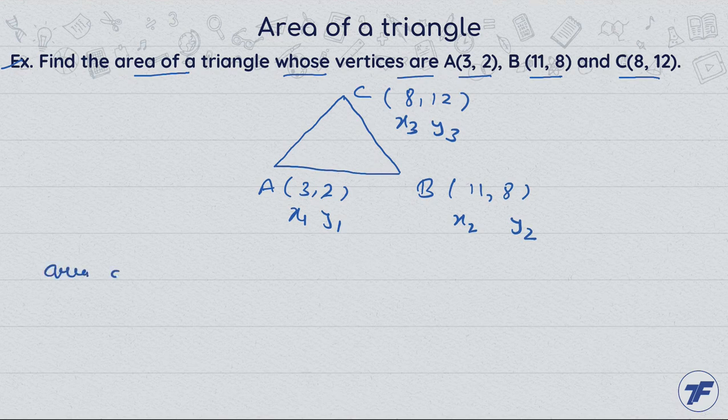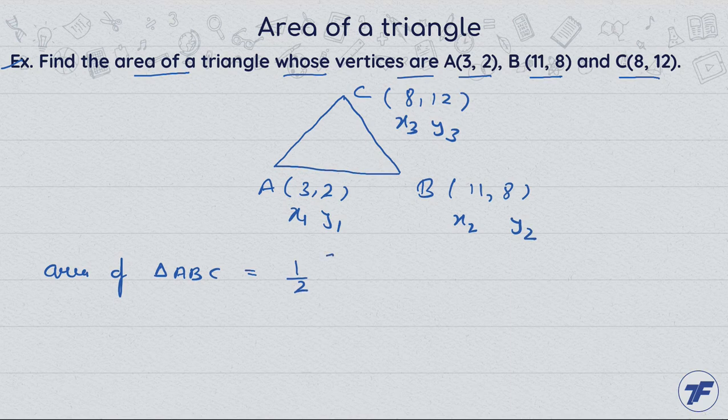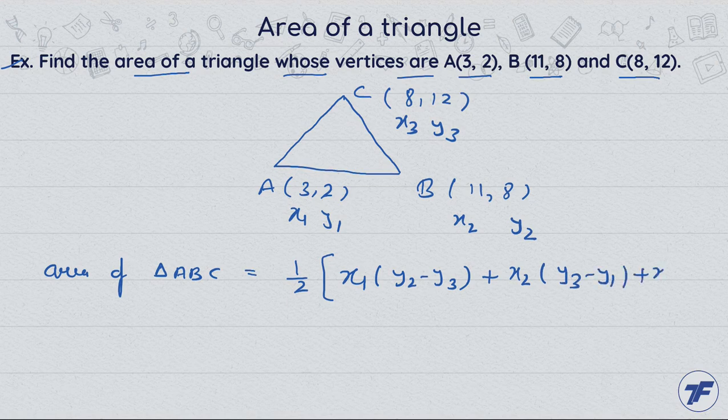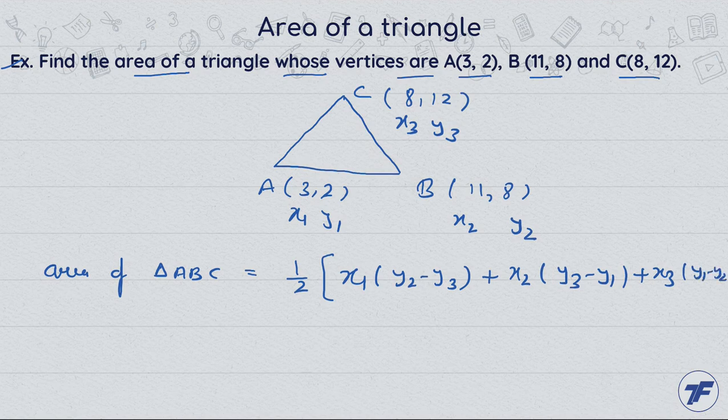area of triangle ABC is 1/2 times the modulus of [x1(y2 - y3) + x2(y3 - y1) + x3(y1 - y2)]. Because negative is not the area, we have to take the modulus.